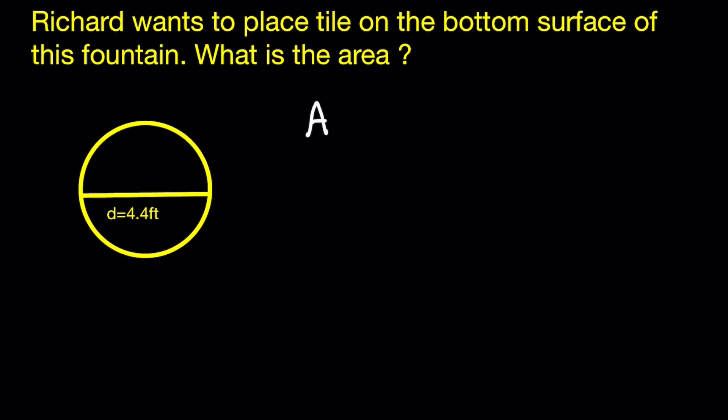To answer this question, you're going to have to use this formula, which will be provided for you, that says area is equal to pi multiplied by radius squared. And this symbol, pi, is equal to 3.14, and that's a number that you have to remember.